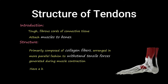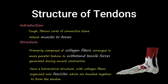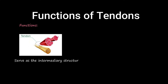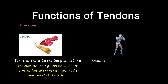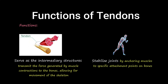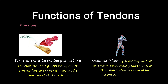Tendons have a hierarchical structure, with collagen fibers organized into fascicles, which are bundled together to form the tendon. Tendons serve as the intermediary structures that transmit the force generated by muscle contractions to the bones, allowing for movement of the skeleton. They help stabilize joints by anchoring muscles to specific attachment points on bones, which is essential for maintaining joint integrity and preventing excessive movement.